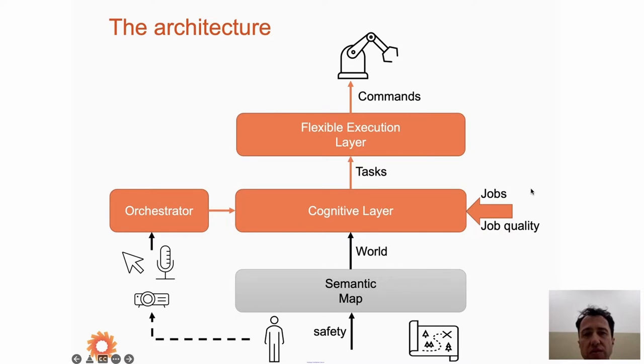At the bottom we have the semantic map for the Rossini architecture, which takes information from sensors, human position, and safety data from the RS4. It builds a representation of the world that will be the main input for the cognitive layer. The cognitive layer is the layer responsible for dispatching tasks between the human and robot, taking as input the job description, job quality indicators, and the output of the orchestrator. The orchestrator coordinates the communication media the human can exploit for interacting with the robot.